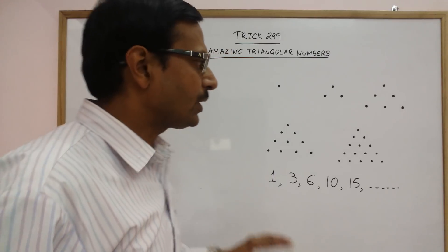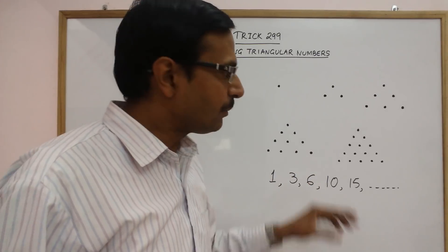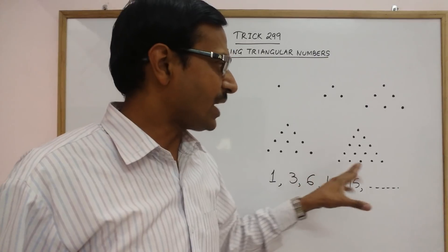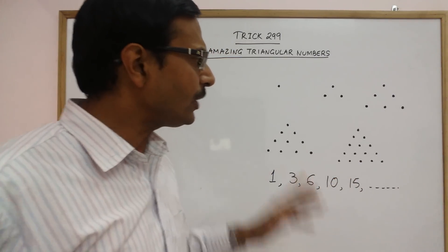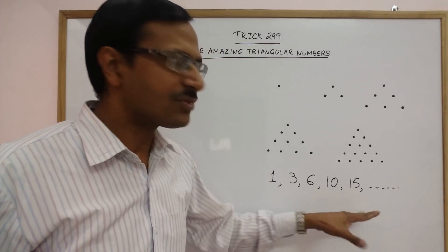Now, you can continue this series by drawing more dots, by adding more rows of dots to this sequence which I have drawn at the last, that is 15 dots. Now, let us observe some particular properties of these triangular numbers.